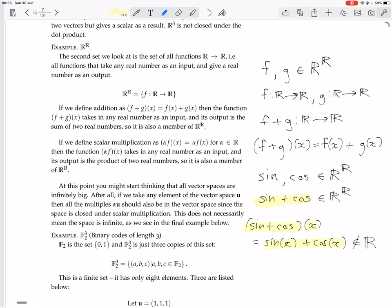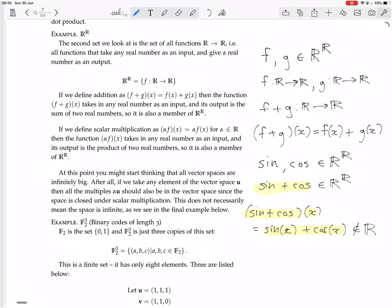We're going to do the same thing for scalar multiplication. We define scalar multiplication as (αf)(x) = α·f(x). It sounds nonsense when you say it, but what it's saying is that you take a scalar, which is a real number. If you multiply that scalar by a function, you should get a new function. What is that function?